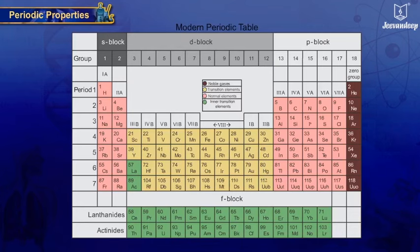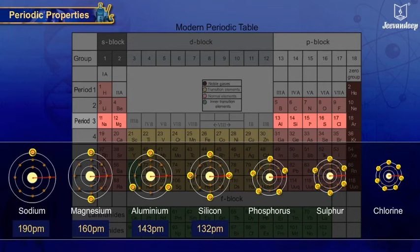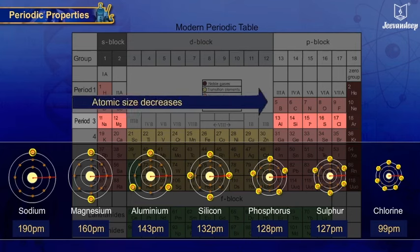Let us observe the gradation of atomic size in the case of elements of the 3rd period. Atomic radius of sodium is 190 picometers, magnesium is 160 picometers, aluminium is 143 picometers, silicon is 132 picometers, phosphorus is 128 picometers, sulfur is 127 picometers, and chlorine is 99 picometers. Thus we see that atomic size decreases from left to right in a period.